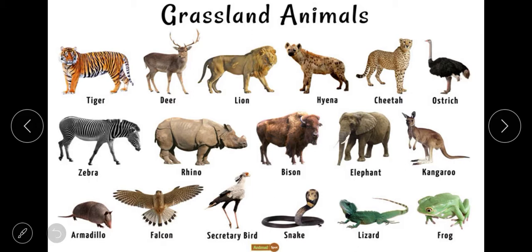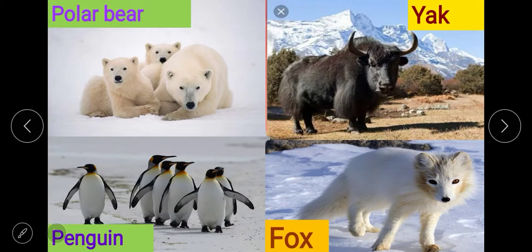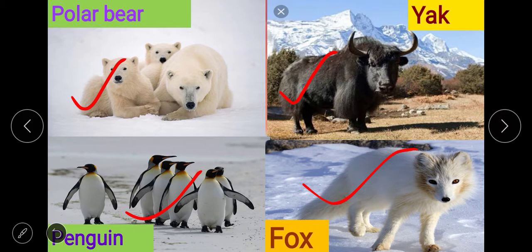In grasslands, the number of animals is less compared to the equatorial forest because of less vegetation. The common animals found in grassland areas are tiger, cheetah, hyena, lion, deer, zebra, and rhino. In the polar region, animals have thick fur on their body to protect them from extreme cold. The common animals found in the polar region are polar bear, yak, penguin, and fox. These are the animals found in the different areas.